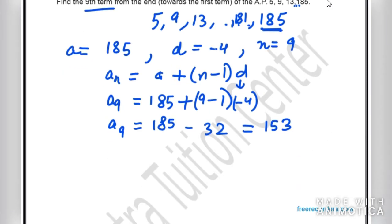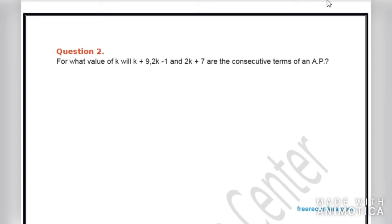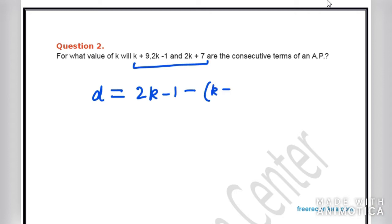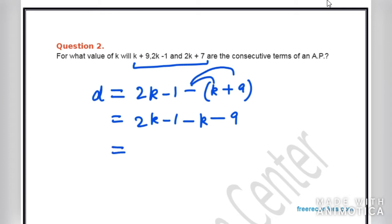Moving on to question number 2: for what value of K will K+9, 2K−1, and 2K+7 be consecutive terms of an AP? Since they are in AP, the common difference D = A2 − A1. So D = (2K−1) − (K+9) = 2K − 1 − K − 9 = K − 10. This gives us equation 1: D = K − 10.